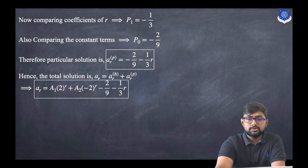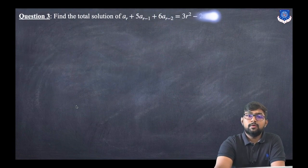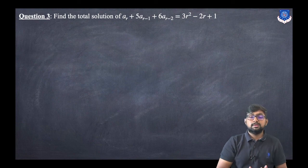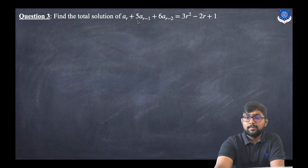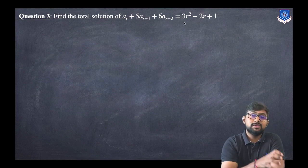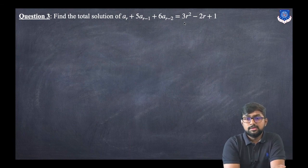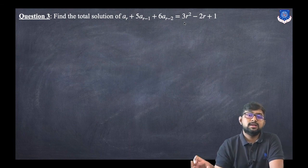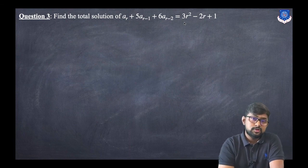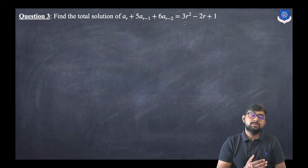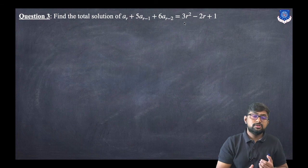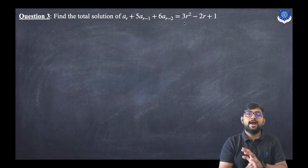That is the final solution. Now let us discuss another example: find the total solution of a(r) + 5·a(r−1) + 6·a(r−2) = 3r² − 2r + 1. The right-hand side is not equal to zero, so it is a non-homogeneous equation. We need to find the particular solution as well as the homogeneous solution and add them.